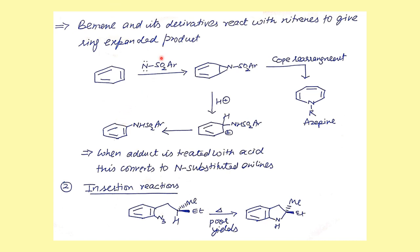Nitrenes also undergo insertion reactions. When nitrenes react with benzene, they undergo an addition across the aromatic ring to form an intermediate. Under heating conditions, a cope-type rearrangement (ring expansion) takes place, giving azepine compounds. However, if acid is added in situ to the intermediate, you end up getting substituted aromatic amines instead.